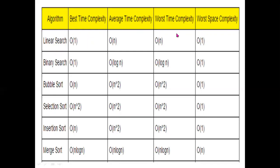First of all, linear search, binary search, bubble sort, selection sort, and insertion sort — what is the worst space complexity? The order of O(1). I'm going to explain the order of O(1).